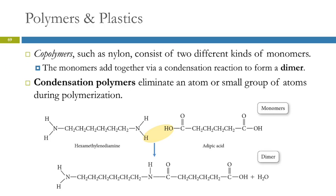Co-polymers have two different kinds of monomers — 'co' meaning sharing. Two different monomers add together to form a dimer — two mers instead of one. These dimers usually form together through condensation. A condensation polymer eliminates an atom or a small group of atoms during polymerization. In an addition polymer you keep all the atoms; in a condensation polymer, as you put the monomers together, you lose some of the atoms.